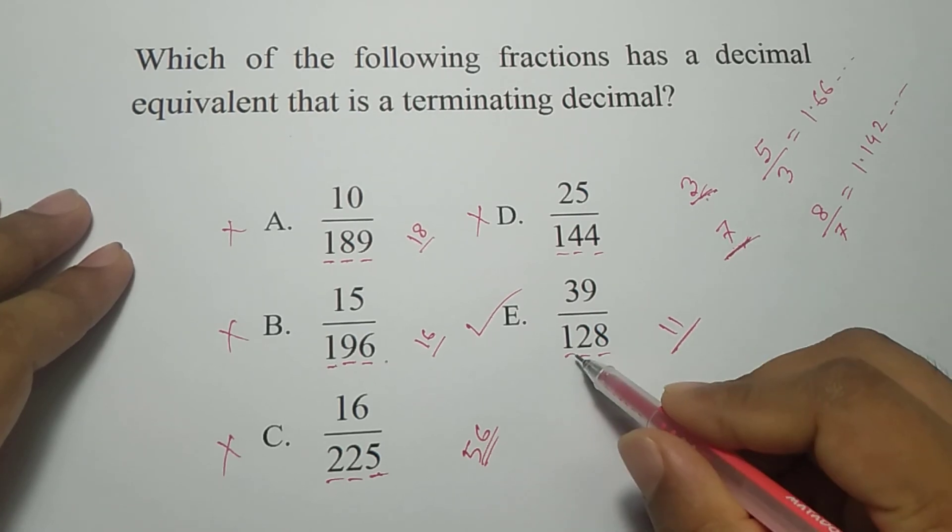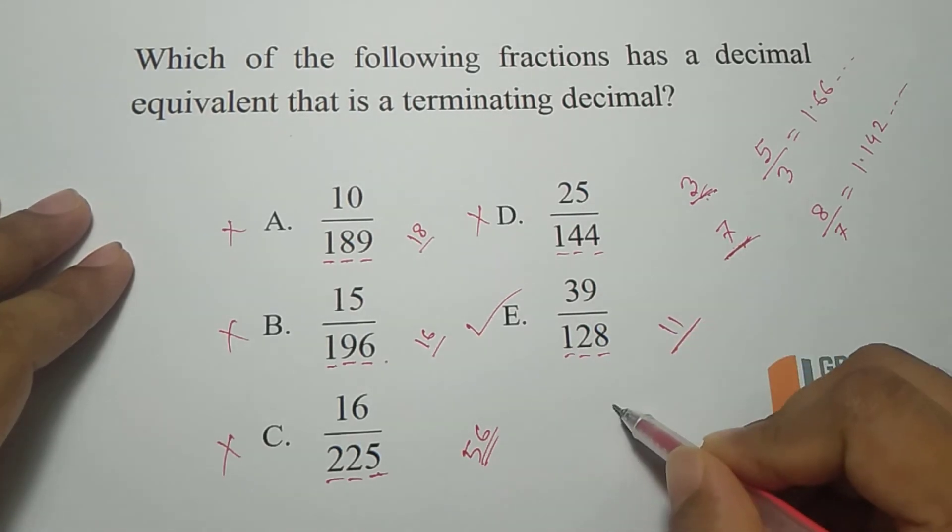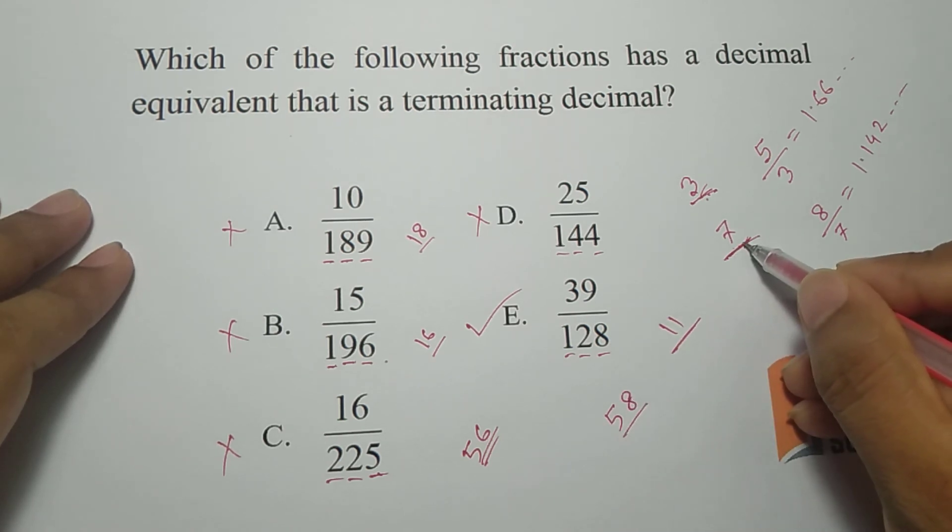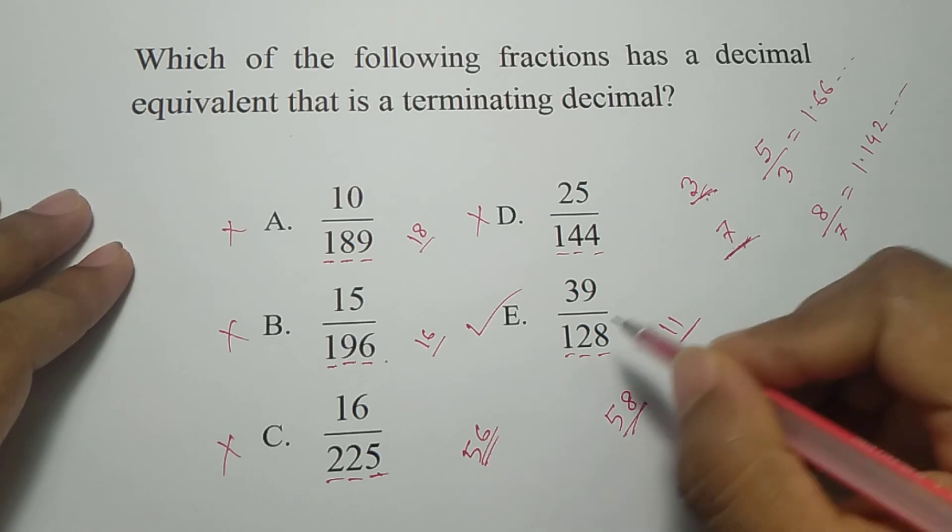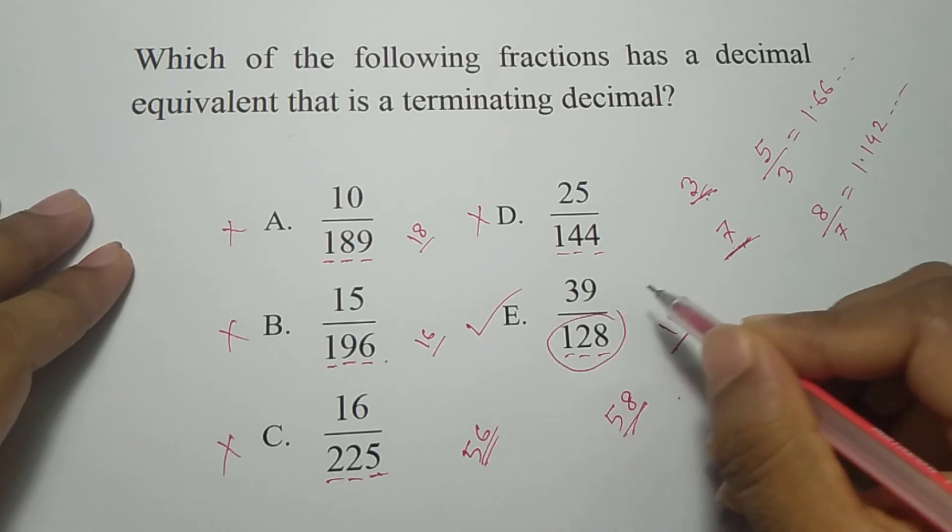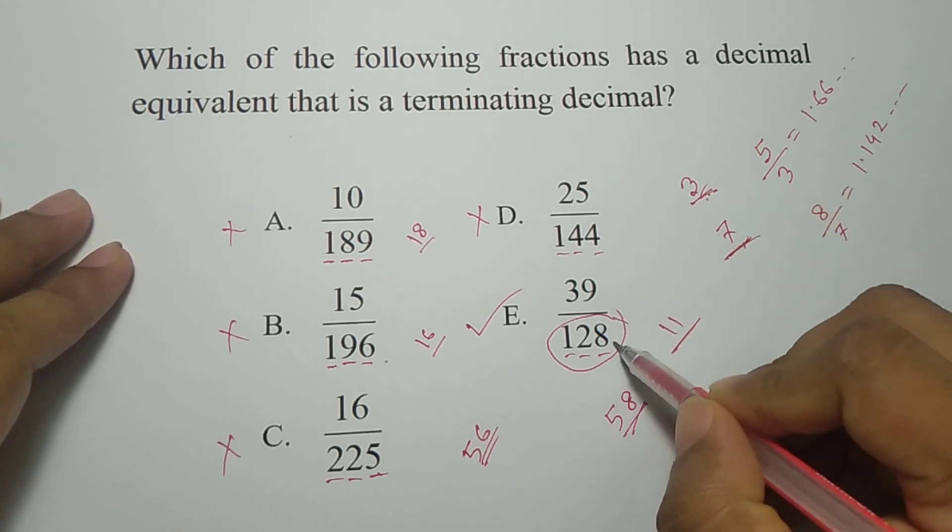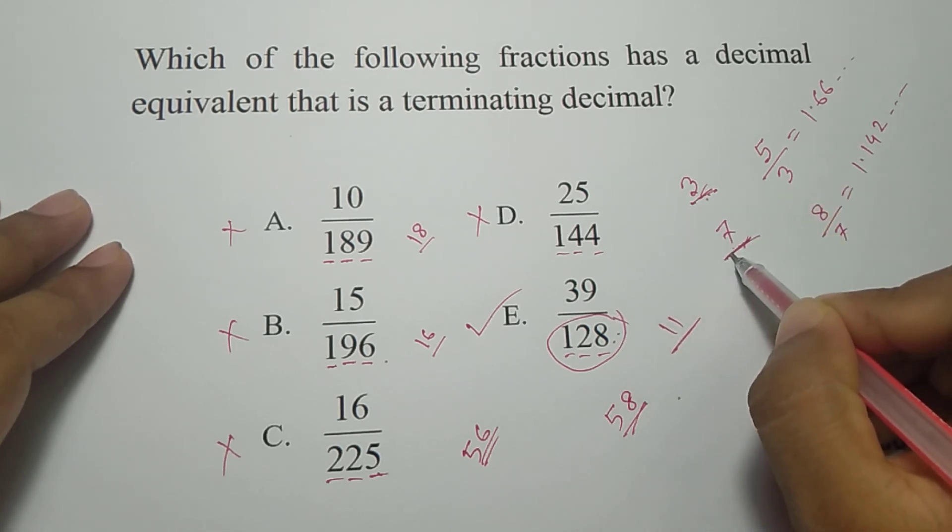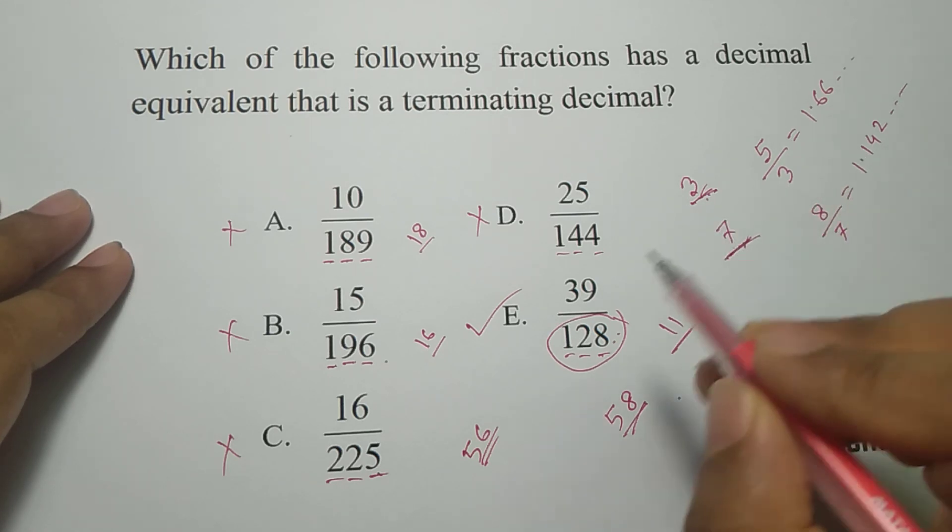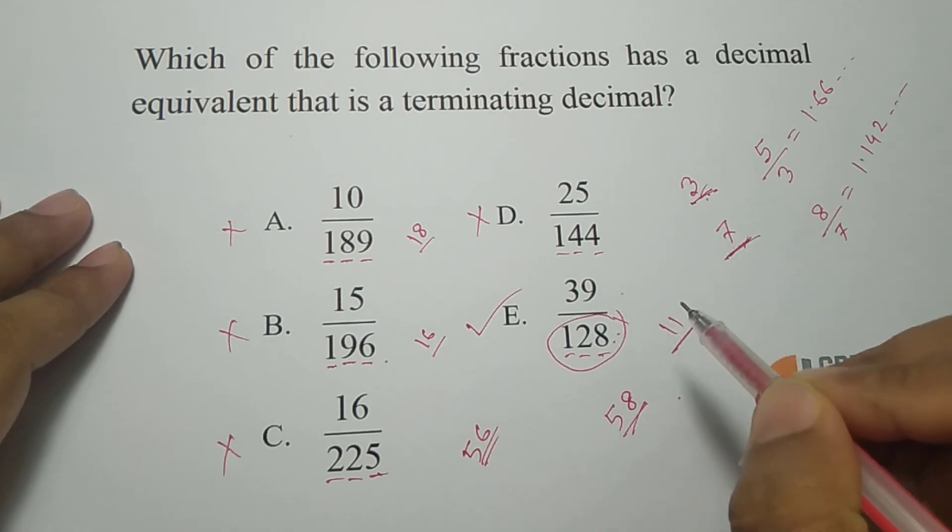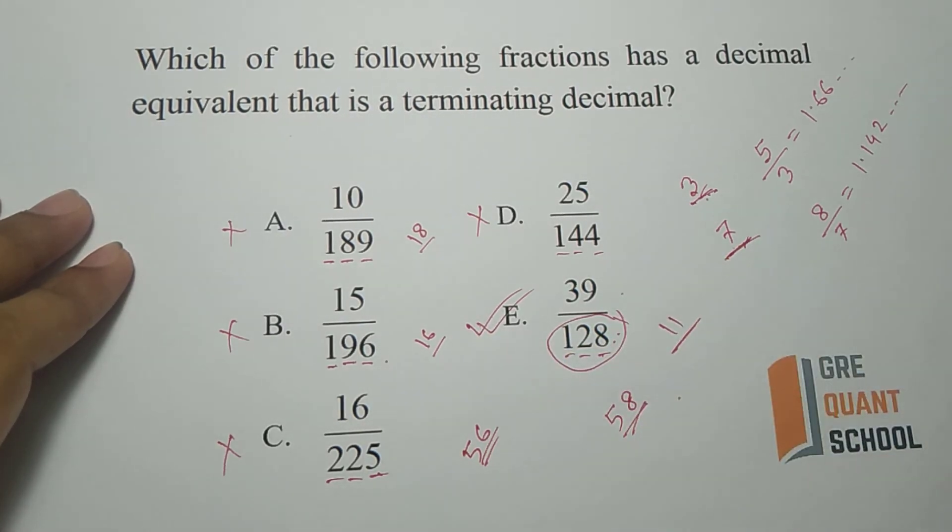7 goes one time and remaining 5, 8, 58, and 7 into 8 is 56, so 58 is not divisible by 7, then the number is not divisible by 7. So there is no 3, no 7, the number is not a multiple of 3 or 7, so it will be a terminating decimal. The answer is E.